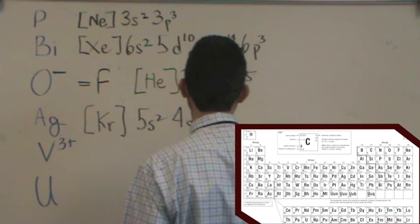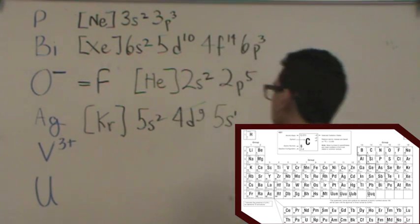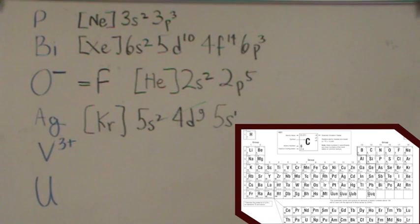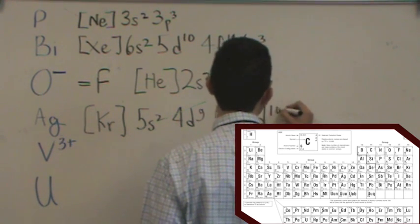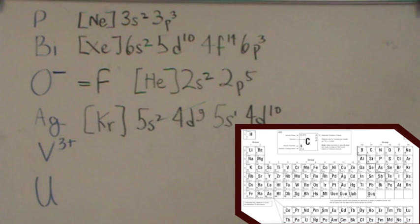where it half fills the S. So the 5S1 is going to be half filled, and it puts that second S electron in the Ds, 4D10. So this is going to happen any time your transition metal is in the fourth or ninth column. It'll follow this exception.